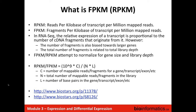FPKM uses a simple formula: take the number of mappable reads or fragments for a feature, multiply by 10 to the 9, and divide by the total mappable reads in the library times the number of base pairs in the gene or transcript. The 10 to the 9 is arbitrary — it normalizes to an imaginary gene of 1,000 bases and a library of 1 million reads. It's just a convention. There are good Biostar posts on this topic if you want to read more.